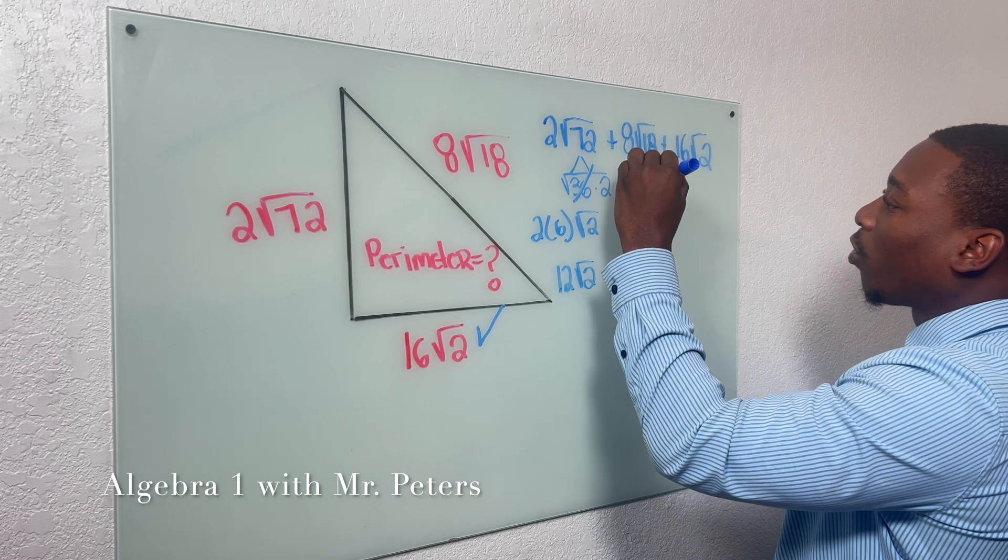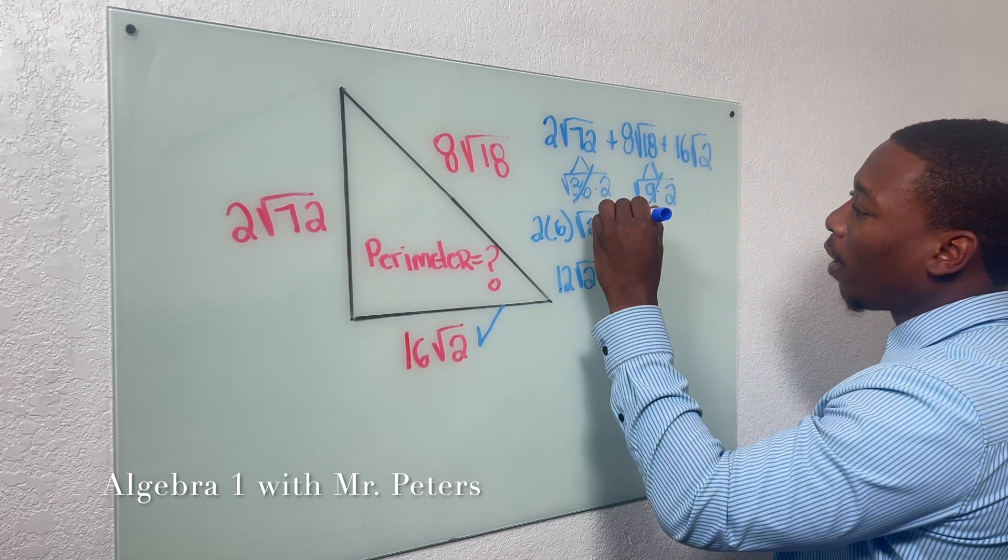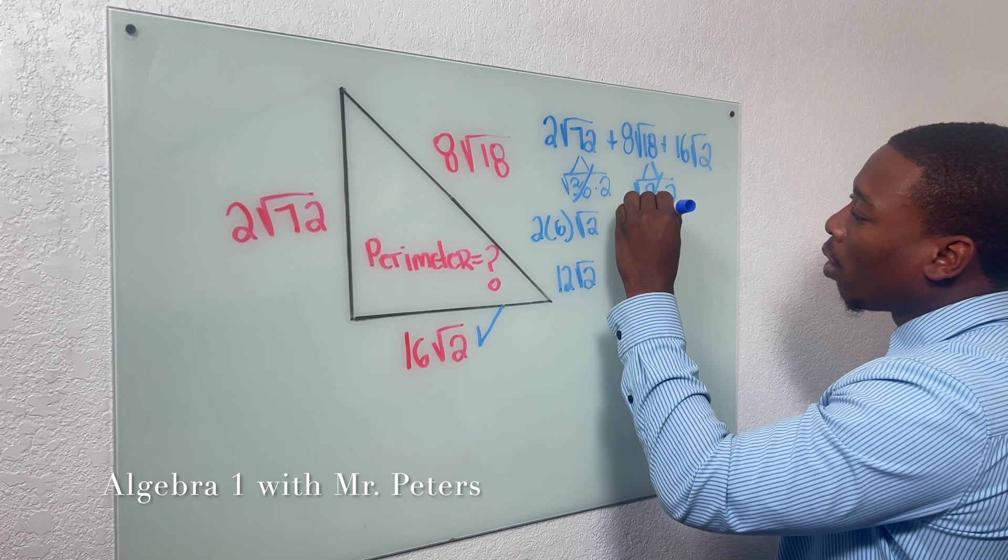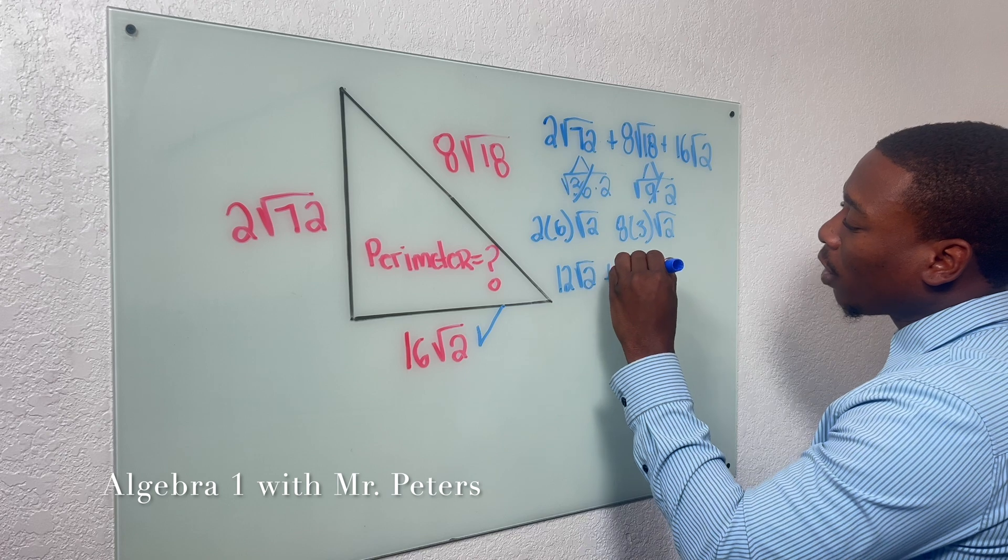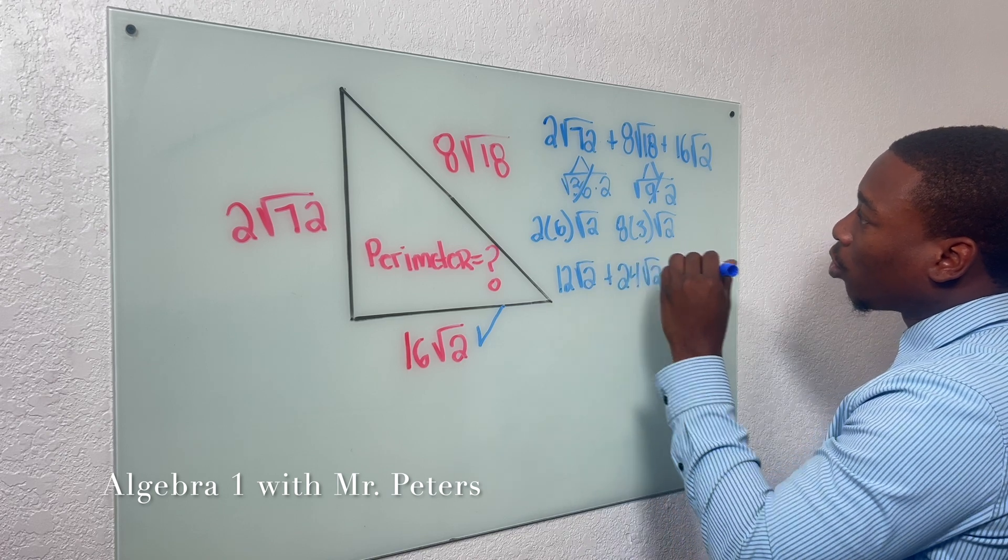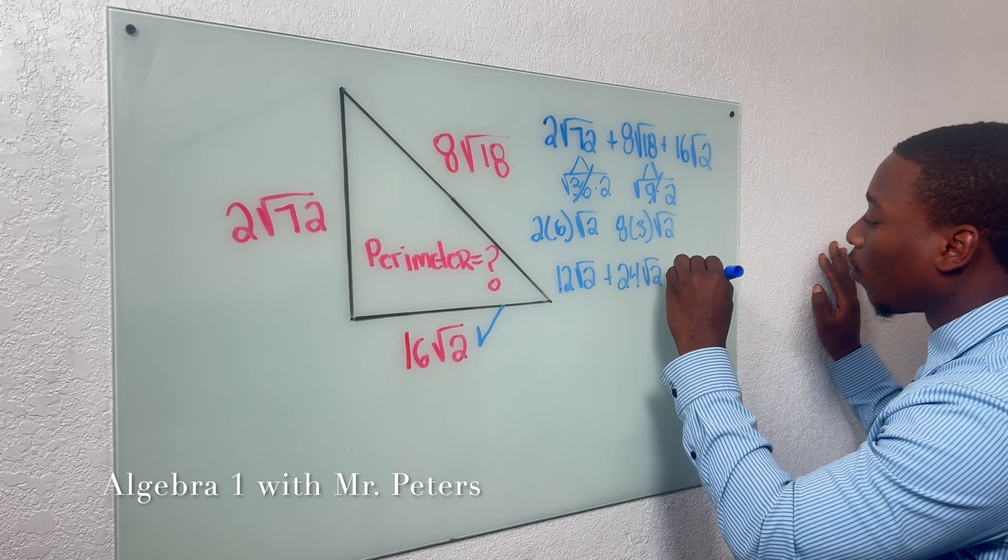Now for our second one, 8 radical 18, we're going to use 9 times 2 to break it down. And once we do, our final answer would be 24 radical 2. And then like we said before, we're just going to bring down 16 radical 2.